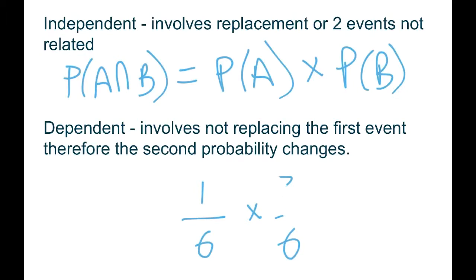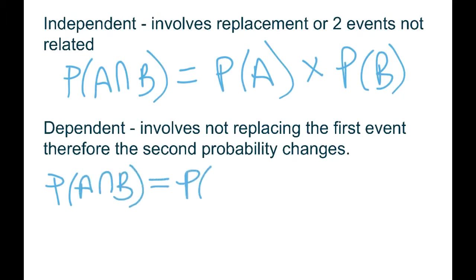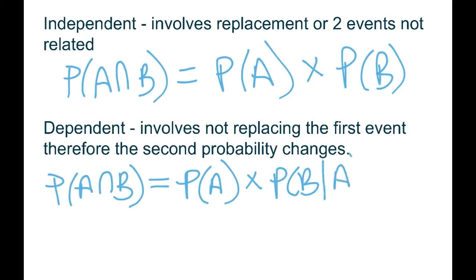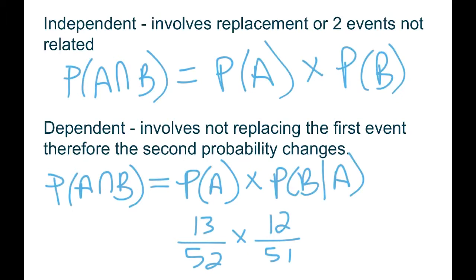For dependent events, the second probability changes because the numbers get reduced after the first draw. The formula is P(A) times P(B|A) — the probability of A times the probability of B given that A has already occurred. For example: probability of getting clubs — 13 out of 52 — then taking a second card without replacing the first. The second club would be 12 out of 51, since one club and one card are gone.